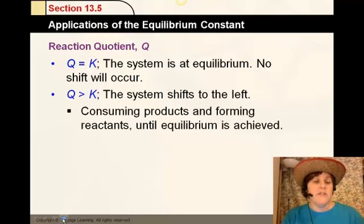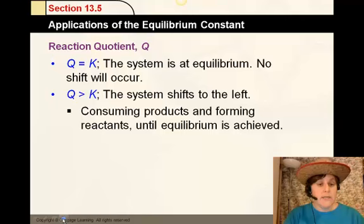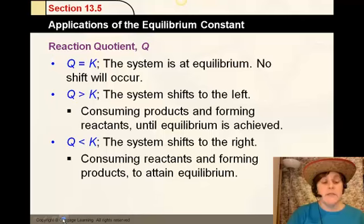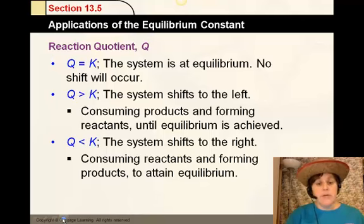However, if the value you have is actually larger than you need, the system shifts to the left. That means you produced too many products, and you have to shift to the left to produce more reactants to make the value of K equal to Q, consuming products and forming reactants until equilibrium is achieved. However, sometimes you're not there yet. In other words, the value of K is bigger than the value you have, which is Q. So the reaction has to continue to shift to the right, consuming reactants and forming products to reach equilibrium.